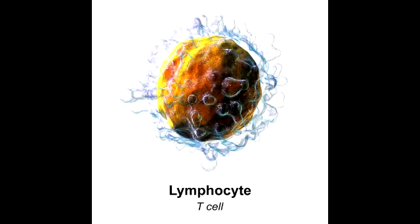Name the three mature T-cells that immature T-lymphocytes differentiate into. Immature T-lymphocytes can differentiate into cytotoxic T-cells, helper T-cells, and regulatory T-cells.